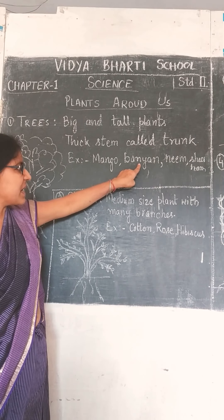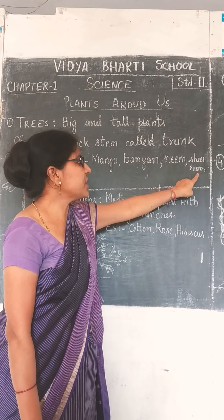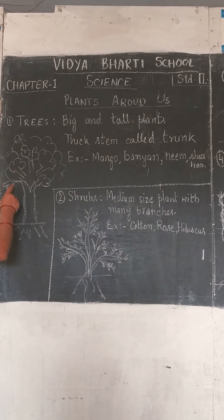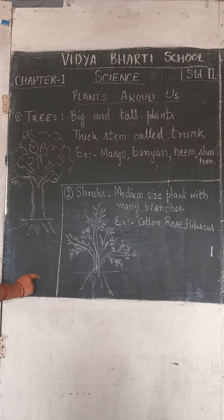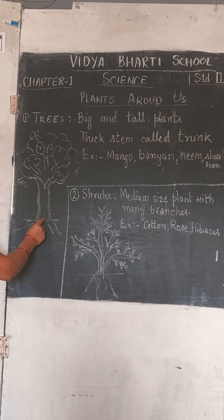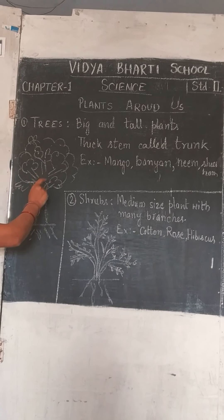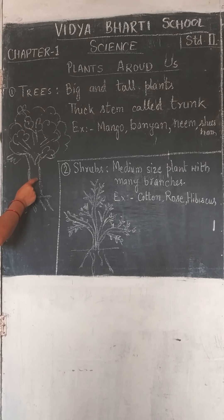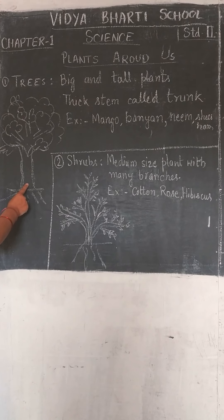यानि आम का पेड़, Banyan tree यानि बरगद का पेड़, Neem tree यानि नीम का पेड़, Shisham tree यानि शीशम के पेड़, और भी बहुत सारे पेड़ आपने देखे होंगे. इन पेड़ों का trunk काफी मोटा है और इनकी जड़ें दूर-दूर तक जाती हैं पानी की खोज में. जड़ों के द्वारा कोई भी पौधा या पेड़ अपना पानी और खनिज लवण प्राप्त करता है और पूरे पौधे को देता है. इस पेड़ में बहुत सारी branches होती हैं और इसका trunk बहुत ही मोटा होता है जिससे लकड़ी निकाली जा सकती है.